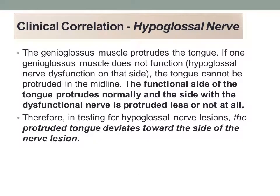Here's a clinical correlation that has already been mentioned in lecture about the genioglossus muscle — we know this is the muscle that protrudes the tongue. If you have a lesion of the hypoglossal nerve on one side, you cannot protrude your tongue straight out forward in the midline. The functional side will protrude normally, but the side with the lesion will not protrude, meaning your protruded tongue will deviate toward the side of the nerve lesion.